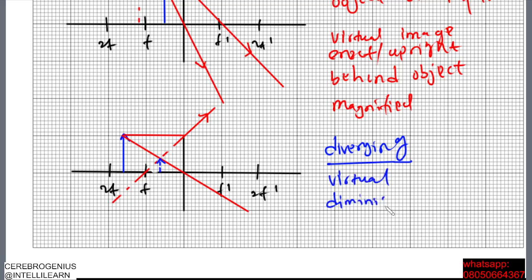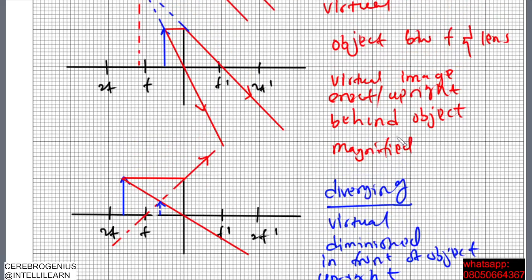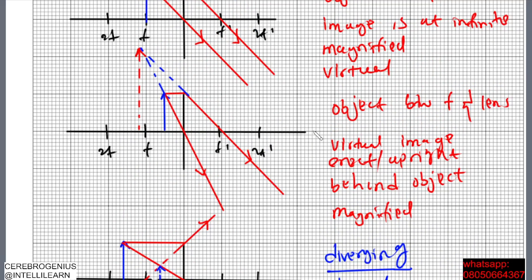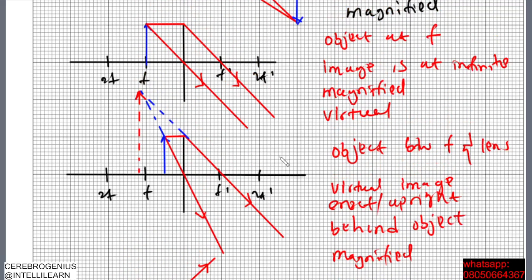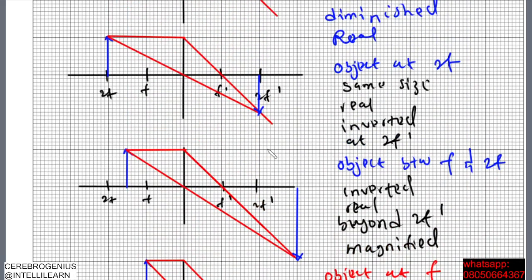For a diverging lens, the image is virtual, diminished, on the same side as the object, and in front of the object. It is upright. Notice the pattern: whenever a lens forms a virtual image, that image is always upright. You should never say a virtual image formed by a lens is inverted — virtual images are always erect, while inverted images are always real.